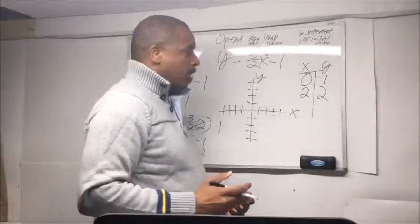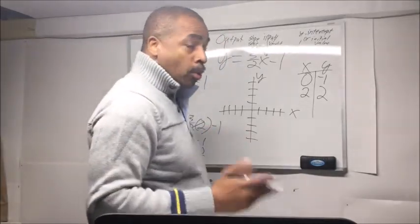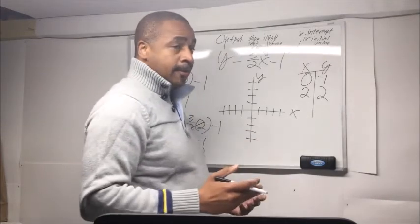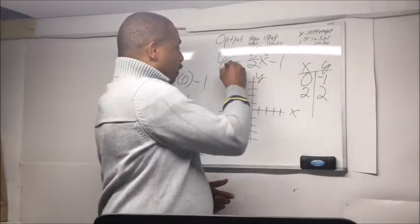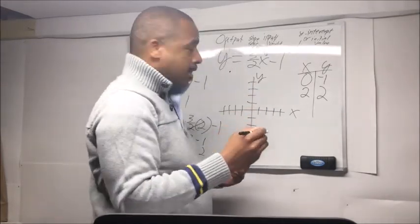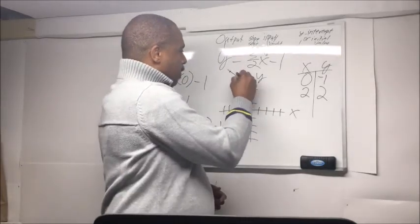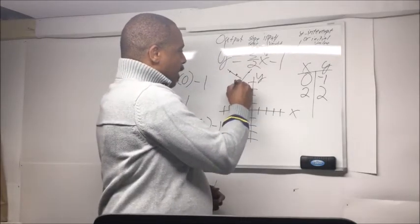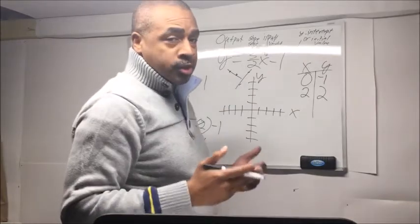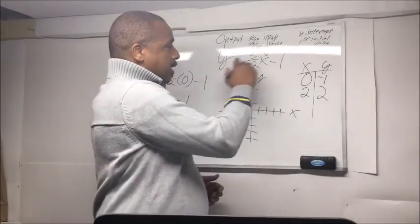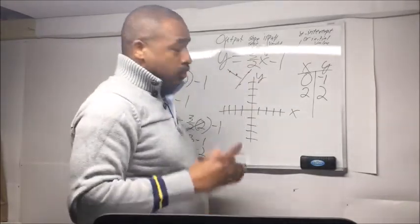Why did I do that? Because that gives me 2 points so I can graph a line. If I just have 1 point, I can't make a line out of that. But if I have 2 points, I can make a line. We have to establish 2 points that exist on this line so we can graph it.